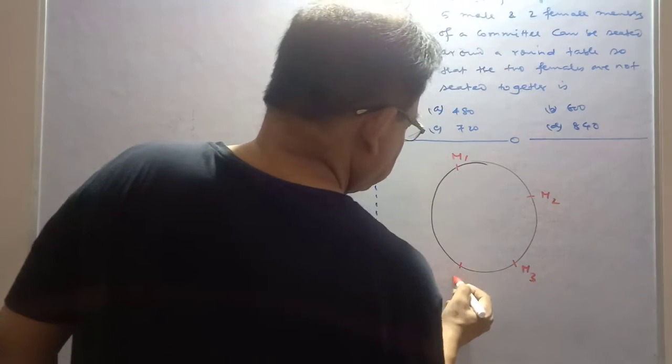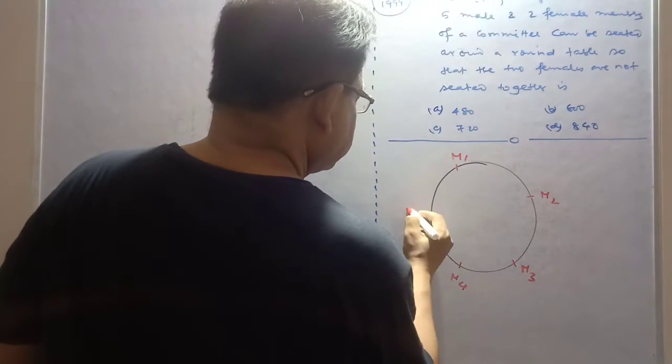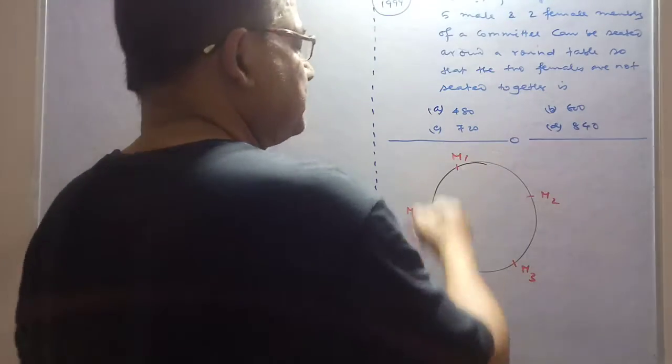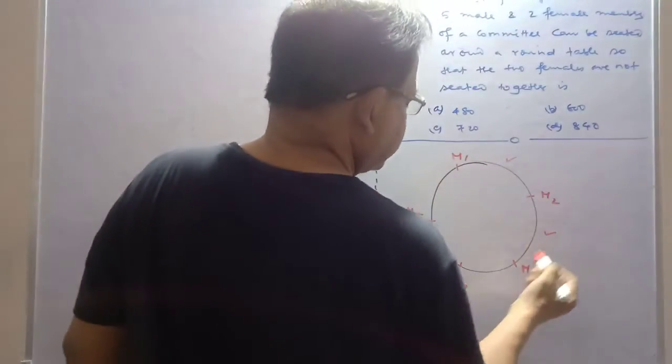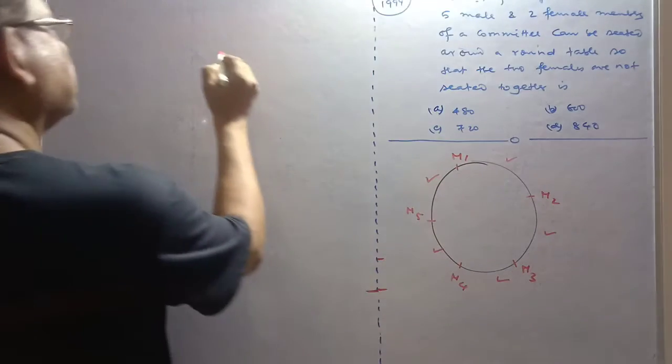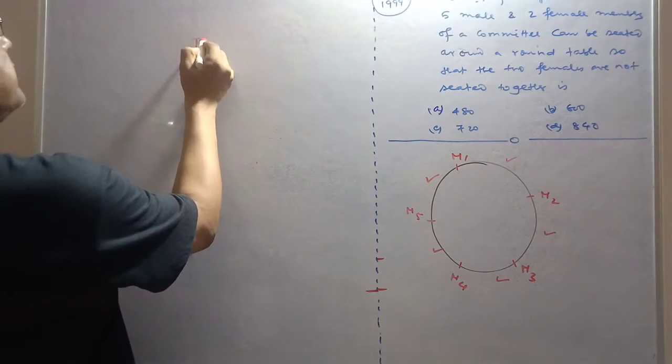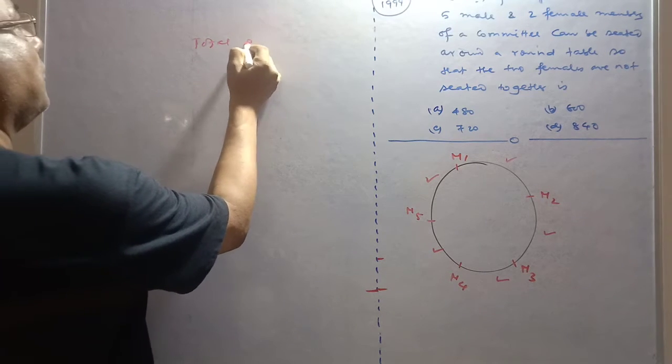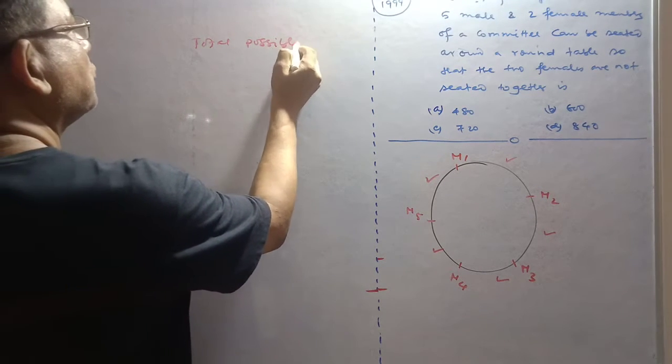is M3, this is M4, and this is M5. Five males sit together, so there are gaps. In these gaps, the females have to be placed. So my dear friends, the total number of possible ways